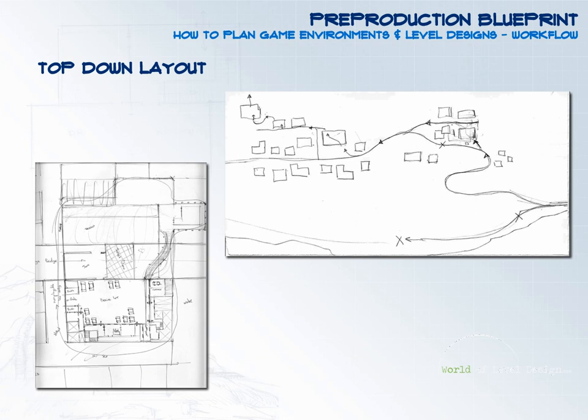The next step is to begin creating a top-down layout — a top-down view of your environment. This helps to get an overall idea of the map layout: where buildings are going to go, how the player will navigate through the environment, where objectives will be, where obstacles will happen, where plot points within the story will unfold, and the overall spatial relationship of buildings, architectural elements, and landscape within your world.